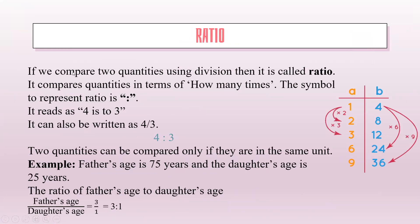Ratio. If we compare two quantities using division, then it is called ratio. It compares quantities in terms of how many times. The symbol to represent ratio is this. It reads as 4 is to 3, and it can also be written as 4 upon 3.